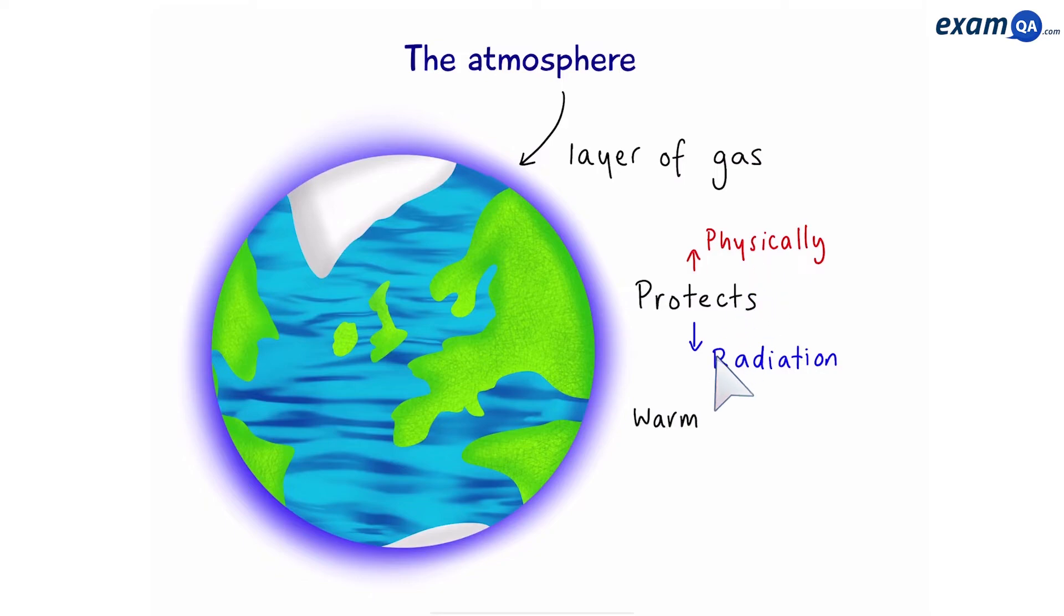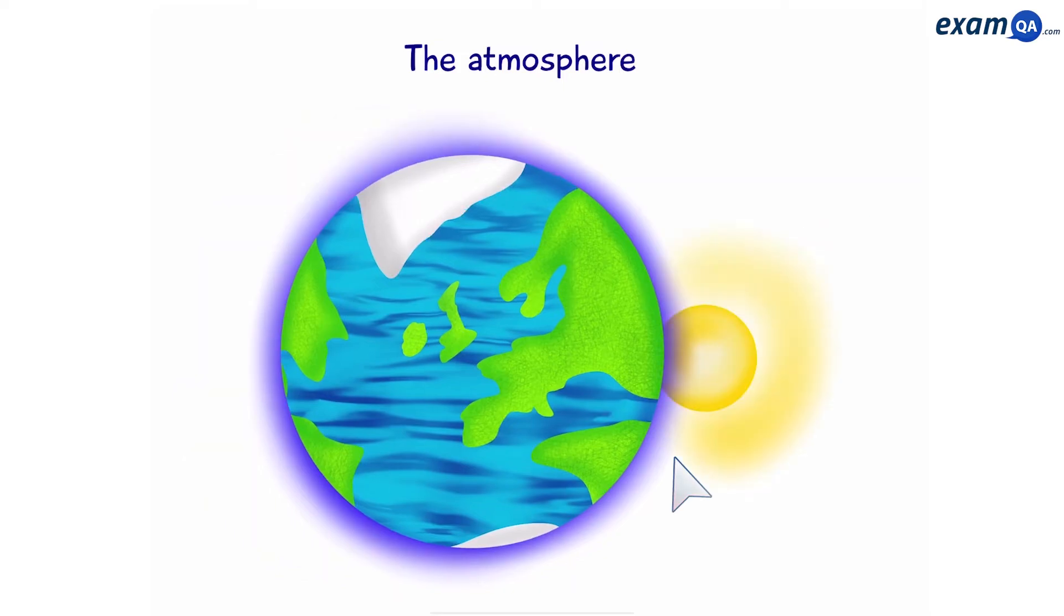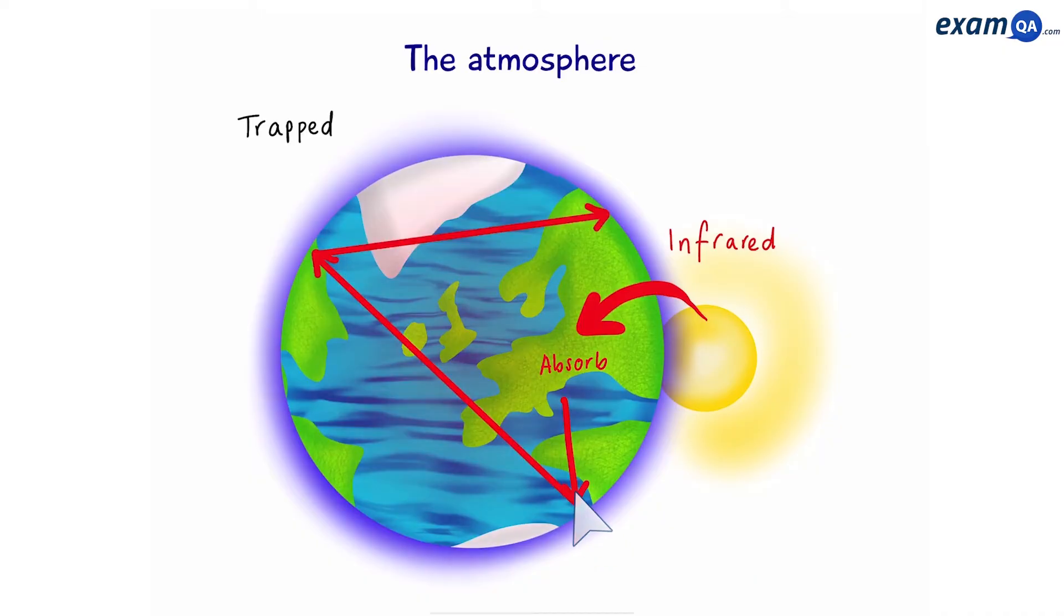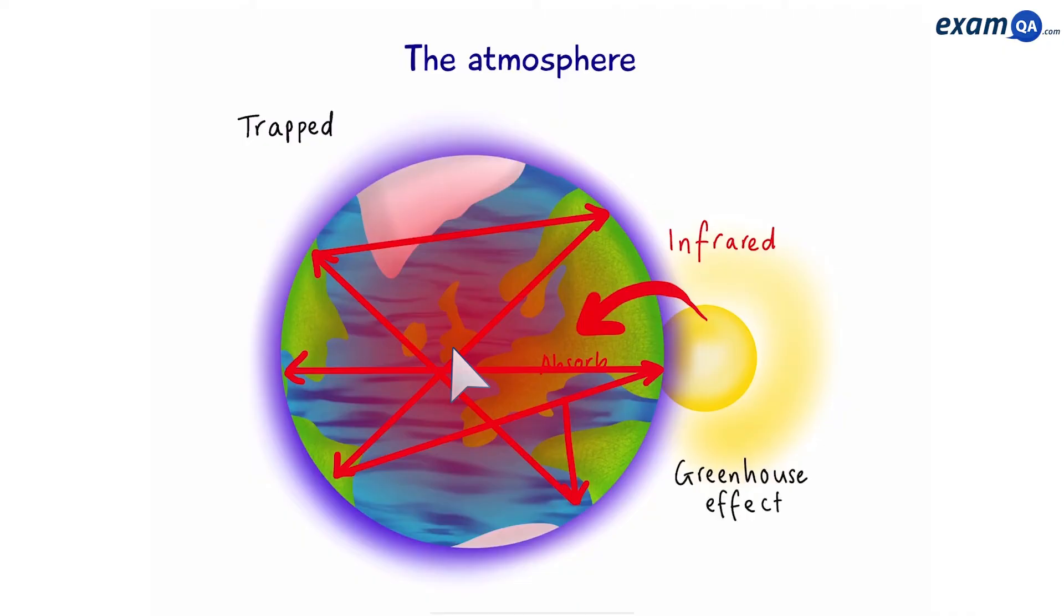The other job of the atmosphere is to keep us warm. So, you mentioned how the Sun shoots infrared radiation towards us. The Earth absorbs it, but also reflects it out. However, the layer of gases in the atmosphere makes sure that this radiation is trapped within the Earth, staying and keeping us warm. This is known as the greenhouse effect. And it's good because it keeps us warm. And the gases responsible for this are called greenhouse gases, an example being carbon dioxide.